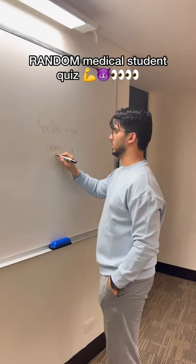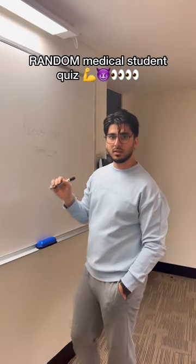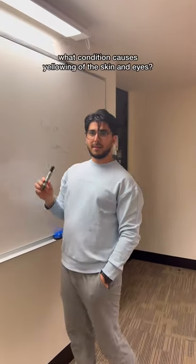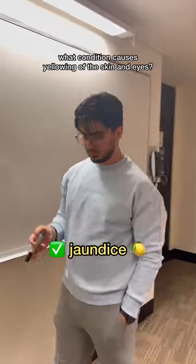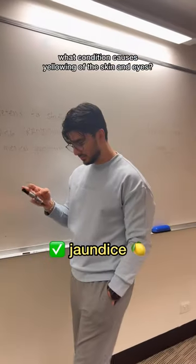Hey, Fad. Yo. All right, so what condition causes the yellowing of the skin and the eyes? Jaundice. Nice, easy one to start with.